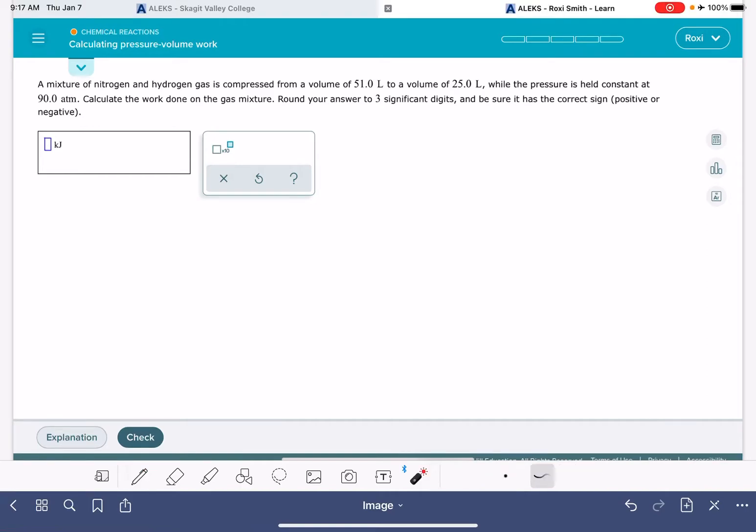In this video I'm going to show you how to solve the ALEKS problem calculating pressure volume work. The equation that we use to calculate pressure volume work is negative P delta V.